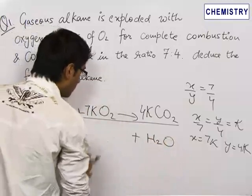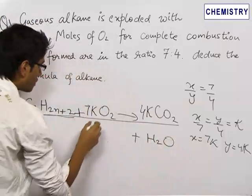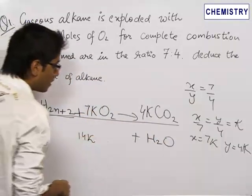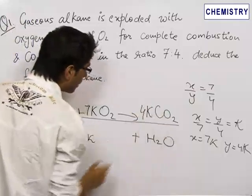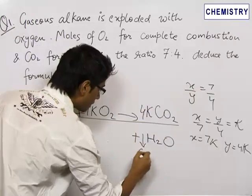Now we see that the oxygen on the left hand side are 7k into 2 which is 14k. So the oxygen towards the right should also be equal to 14k. Here we have 4k into 2 that is 8k. So here the oxygen should be 6k.